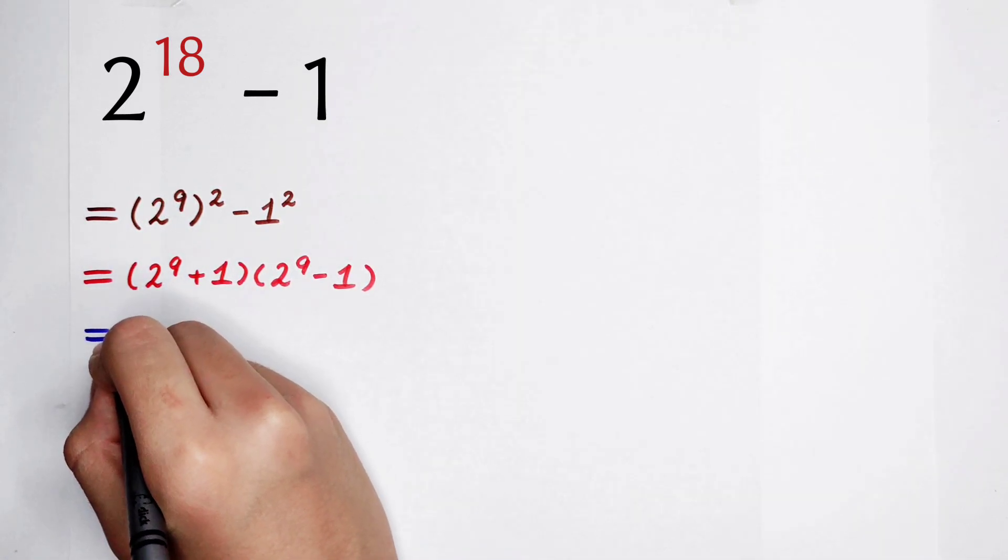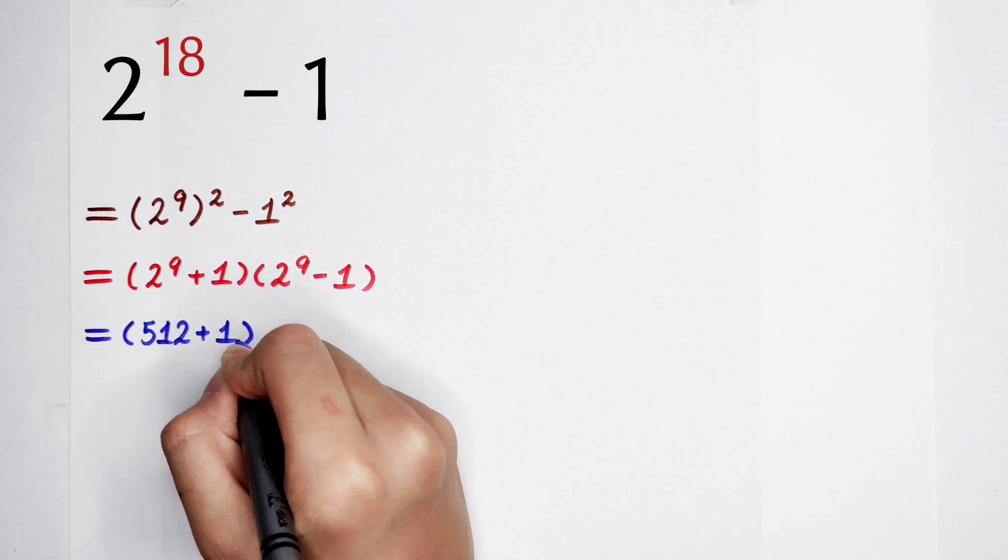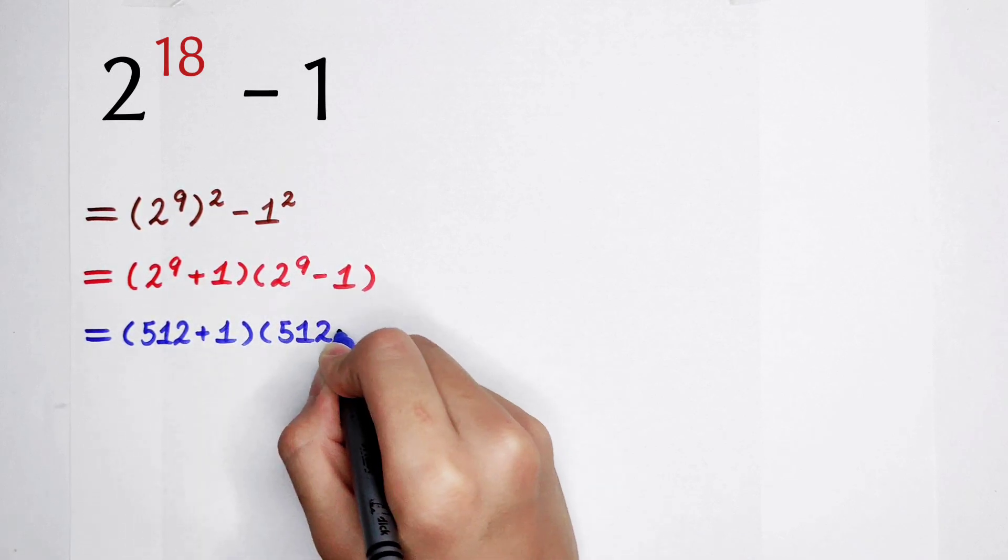So, it is 512 plus 1, and then times 512 minus 1.